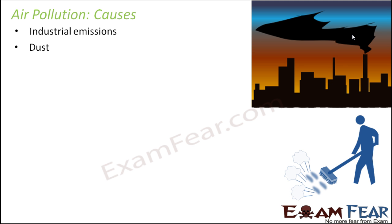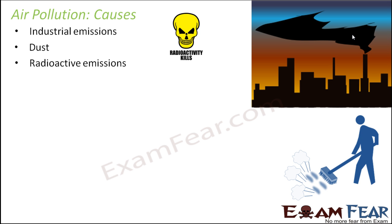Dust from large stretches of land with little or no vegetation is another cause. If you have many plants or trees, the roots hold the soil tightly. But when there are no plants, the soil or sand tends to move from one place to another, resulting in more dust. With little vegetation, there is more dust, and this dust in turn pollutes the air.